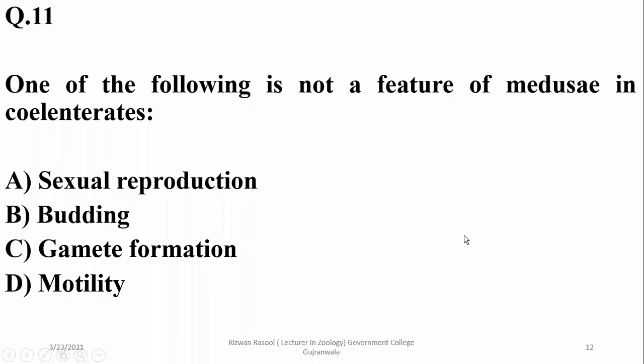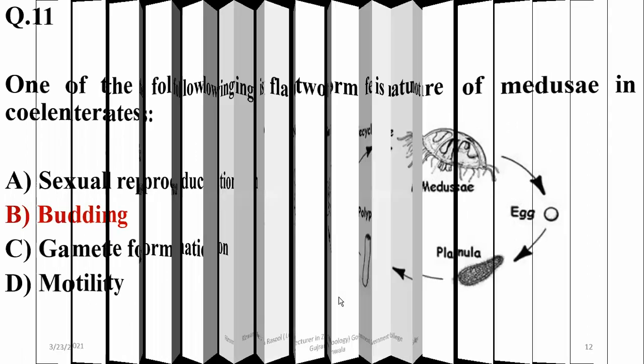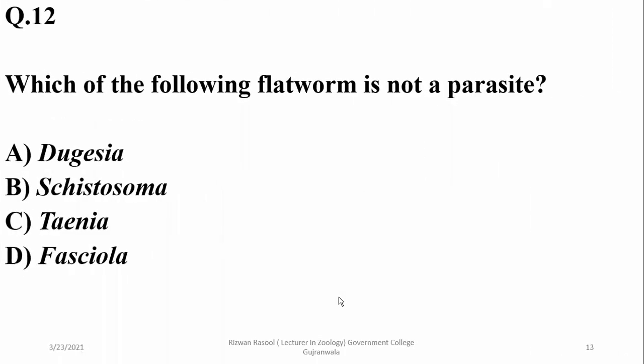Question ten: budding is not a feature of medusa in coelenterates. Medusae are sexually reproducing, show gamete formation, and are motile. Budding is a feature of polyp forms in cnidarians.